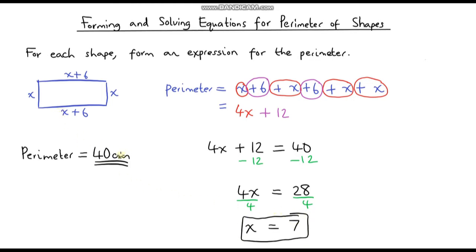The value of x is 7, and we can check that. Let's pop 7 into our shape. This side length will be 7, this side length will be 7. These two side lengths will be 7 plus 6, which is 13. And just to make sure, if we add all of these together we should get 40. 13 plus 7 is 20, 13 plus 7 is 20, and 2 lots of 20 is 40. So we know we have got it correct.